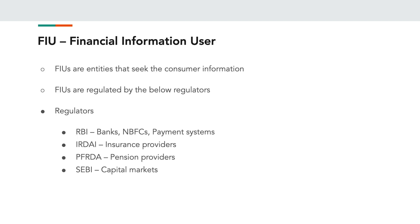The next entity is the Financial Information User (FIU). FIUs are third-party companies or banks that need this information for providing a product or service to the end consumer. These can be banks or any third-party companies regulated by the four major regulators in India: RBI, who takes care of banks and payment systems; IRDAI, who oversees insurance providers; PFRDA, who takes care of pension providers; and SEBI, who oversees capital markets. Any entity regulated by these four regulators can become a financial information user.